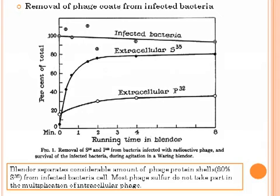The key experiment conducted by Hershey and Chase was to utilize a Waring blender to show that phage protein can be separated from living bacterial cells in infected cultures, whereas phage DNA remains associated with the bacterial cell. After running an infected culture in their blender for two minutes, nearly 80% of the phage protein could be recovered independent of the bacterial cells. However, only about 20% of the DNA could be recovered. Nearly all of the infected bacteria remained viable during the experiment, suggesting that DNA is harbored within the living bacterial cell and that most of the protein plays no part in phage replication.